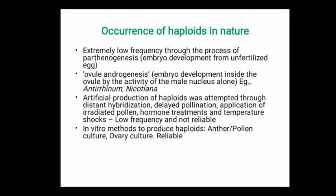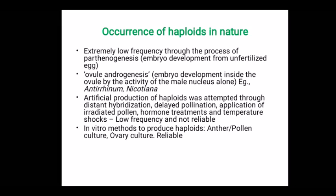The occurrence of haploid in nature is at an extremely low frequency. Haploid plants occur in nature through the process of parthenogenesis, meaning embryo development from unfertilized eggs. Another way is ovule androgenesis, meaning embryo development inside the ovule by the activity of male nuclei alone. These things happen in plants like Antirrhinum and Nicotiana.